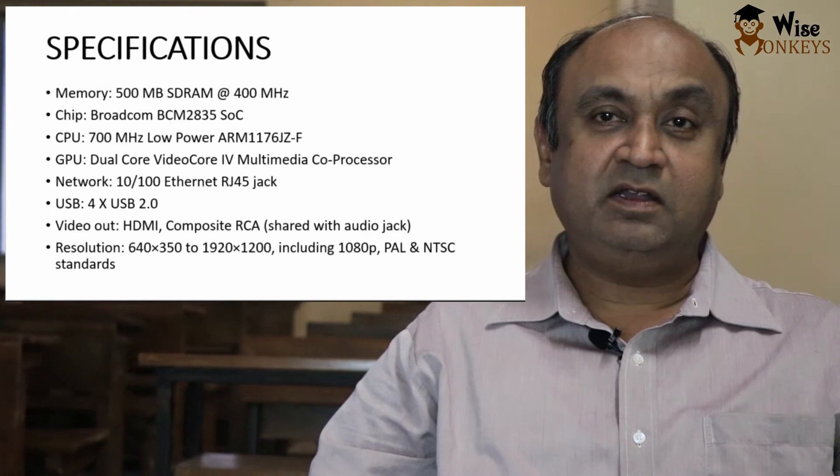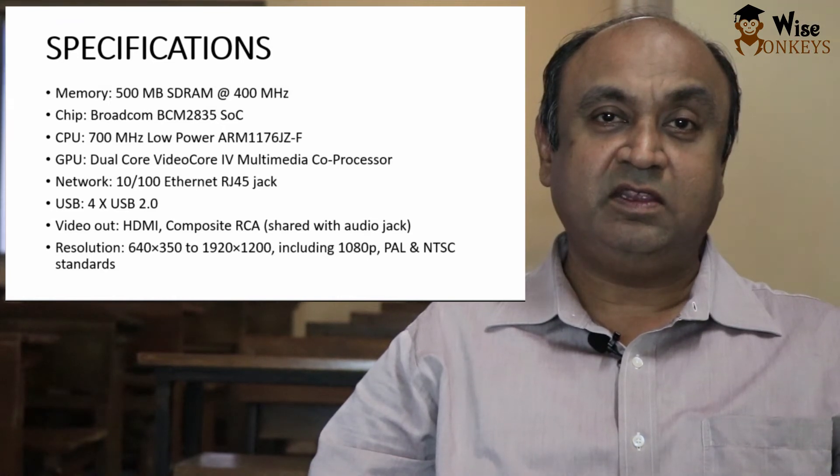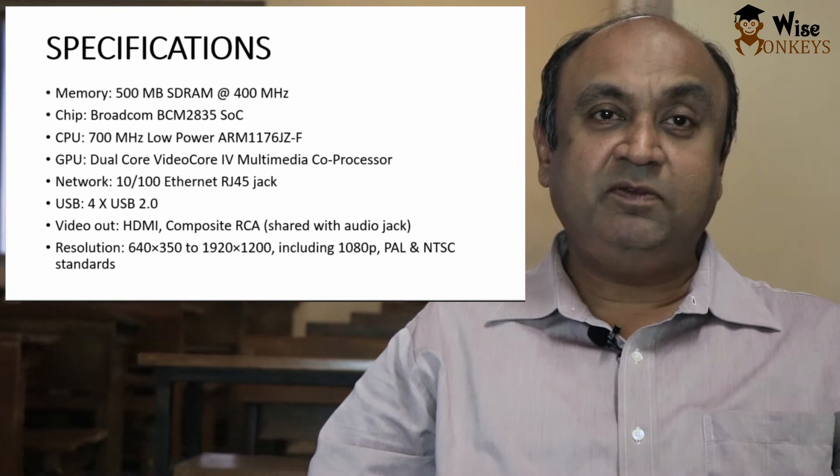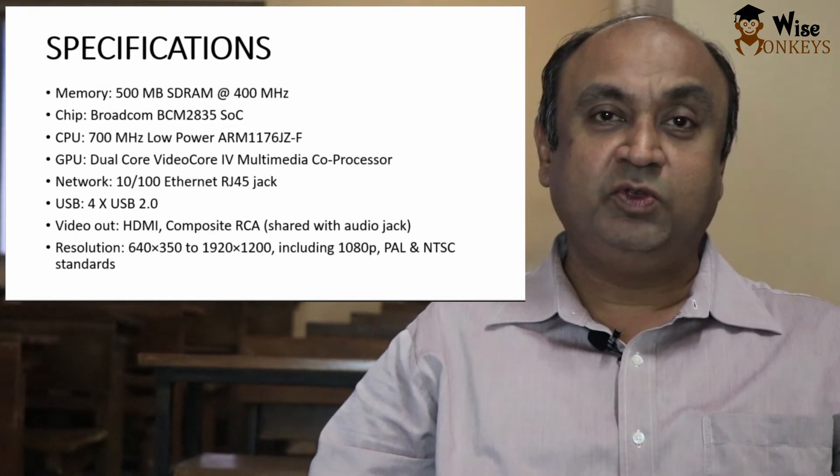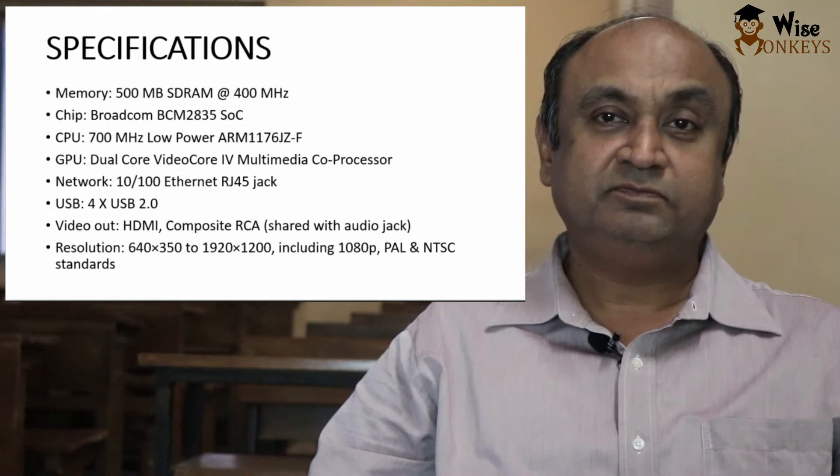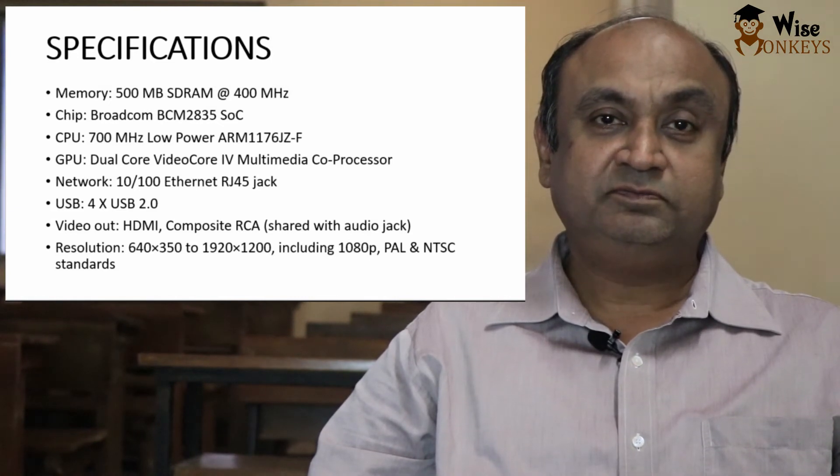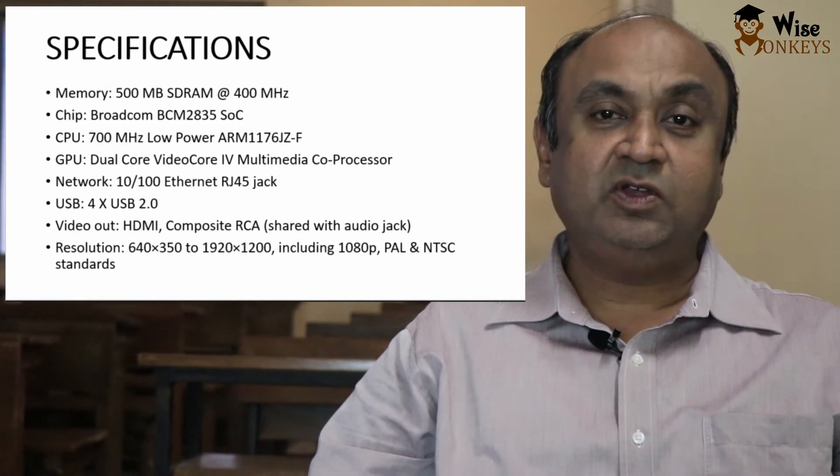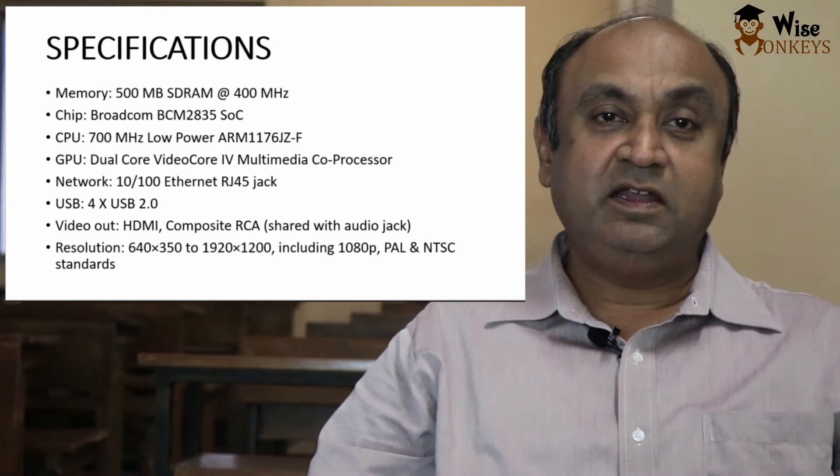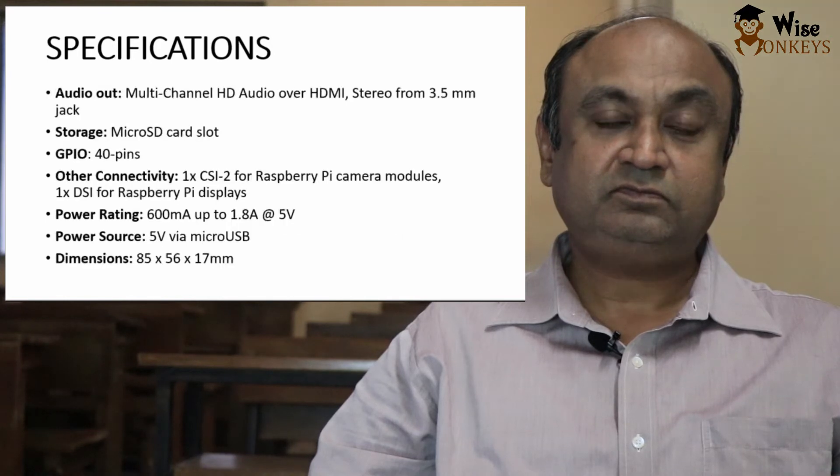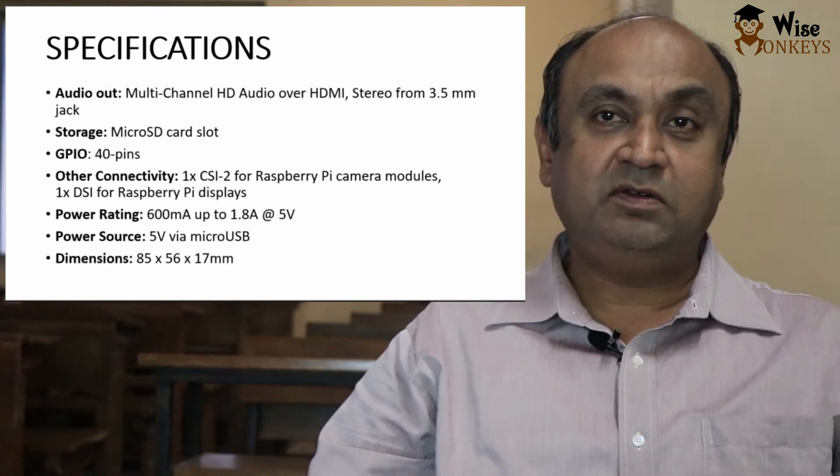Built-in network card 10x100 Ethernet with RJ45 jack. Raspberry Pi Model 3B Plus has 4 USB 2.0 ports. It has HDMI video out and resolution of 640x350 to 1920x1200. It also includes 1080 and it supports PAL and NTSC standards. It has an audio out, multi-channel, high definition audio over HDMI, stereo from 3.5mm jack.